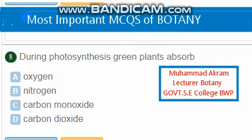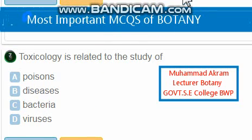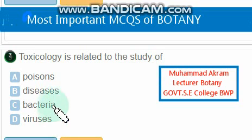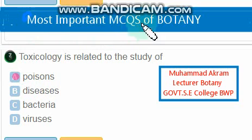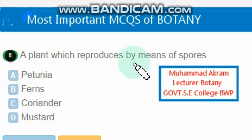During photosynthesis, green plants absorb carbon dioxide — the right option is option D. Toxicology is related to the study of poisons — the right option is option A.